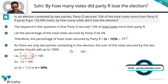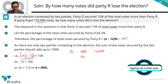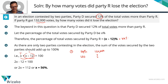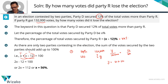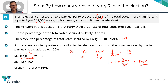Method 1: We know that 44% of the total votes equals 132,000 votes (given). We need to find what 12% of the total votes translates to, since that's the margin of defeat for party R. It's a straight ratio-proportion: Y / 132,000 = 12 / 44. So Y = (12 × 132,000) / 44. Since 44 cancels with 132 leaving 3, we get 12 × 3,000 = 36,000. The margin of defeat for party R is 36,000 votes.